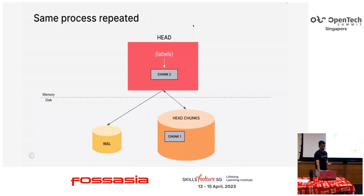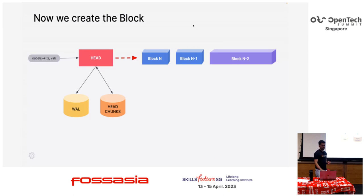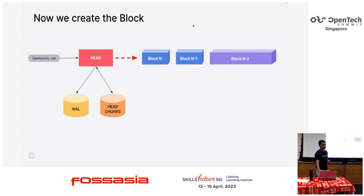The same process repeats — you get more data, more chunks get filled. Now you have a lot of data in Prometheus. How do you take care of it? We create something called persistent blocks out of the data that's present in the head block right now. We need to do that to make queries and a lot of other things efficient.